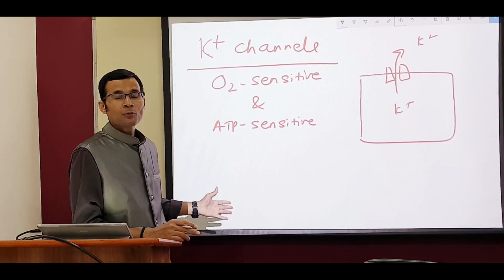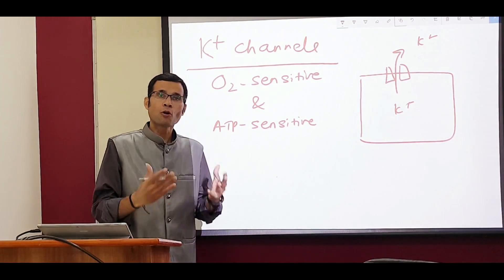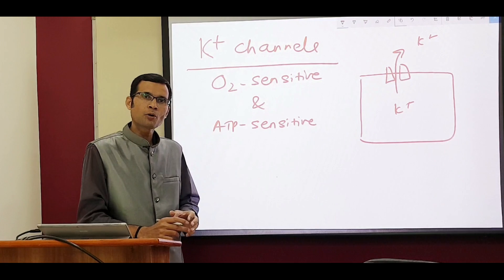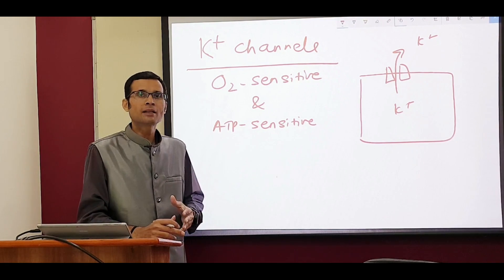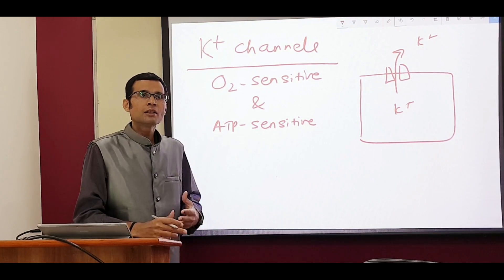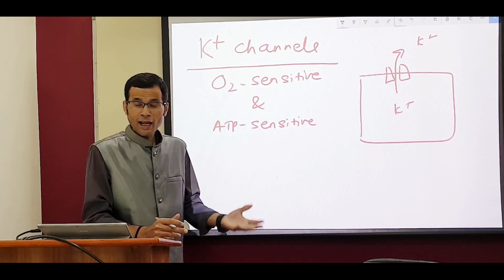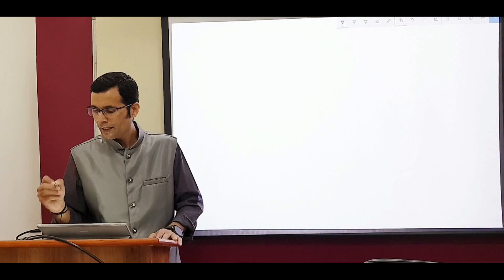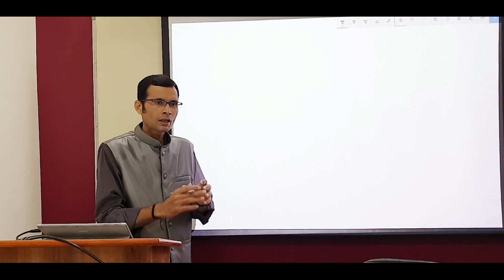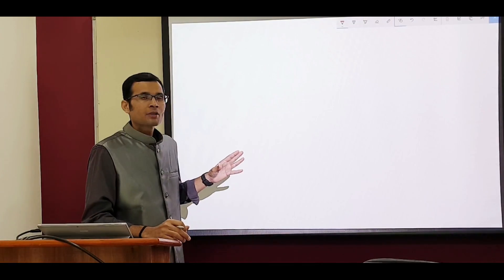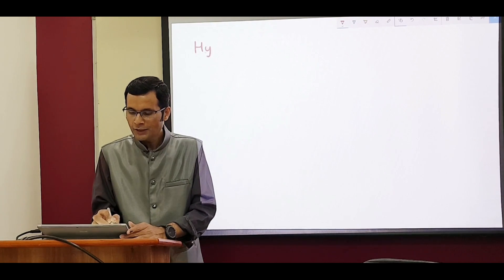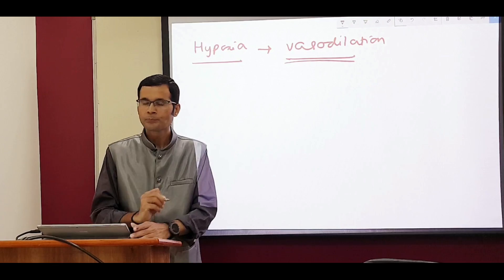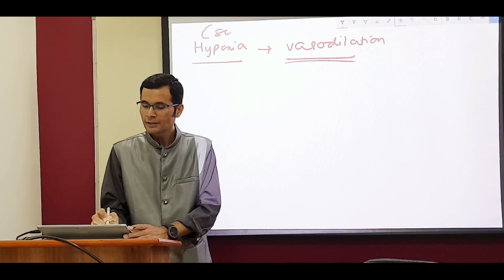With this background, let's try to understand how these channels function and what they achieve. These channels are present at places in the body associated with energy balance — either directly by generation of ATPs or lack of ATPs, or presence or lack of oxygen. In the systemic vessels, hypoxia leads to vasodilation — the vessels dilate.